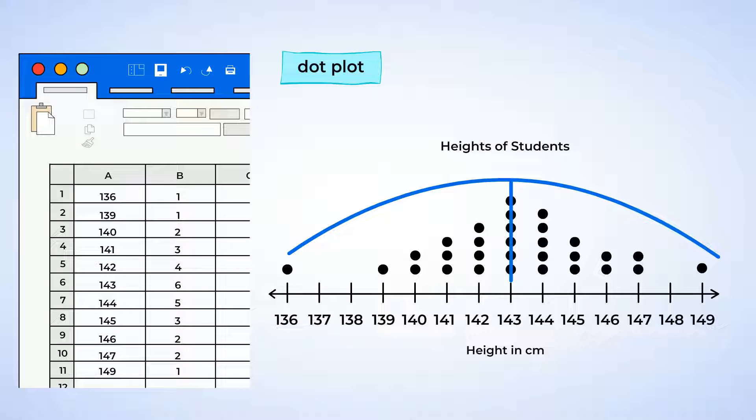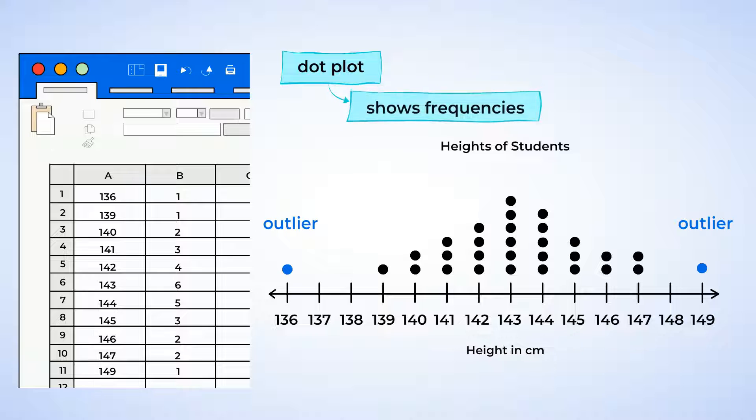Cool, it doesn't skew to the right or the left. And we can also see the outliers. 136 centimeters, and 149 centimeters.